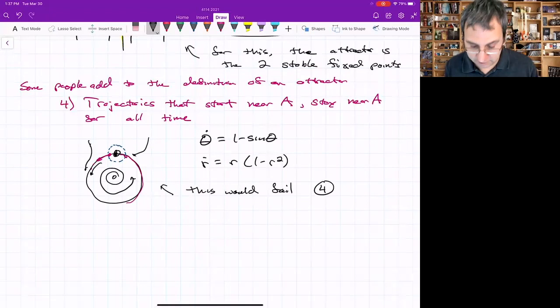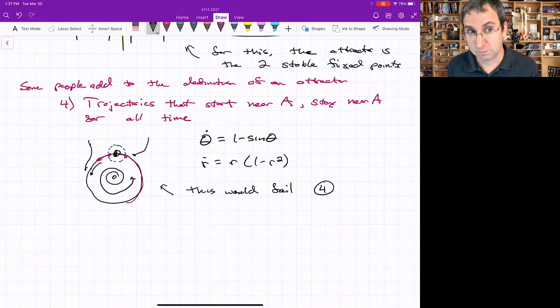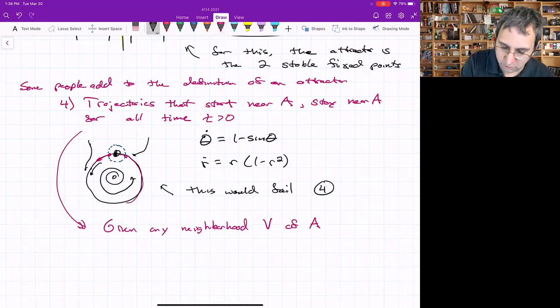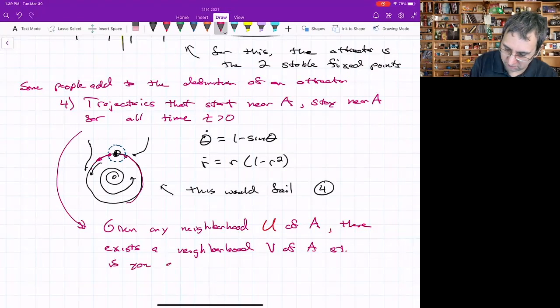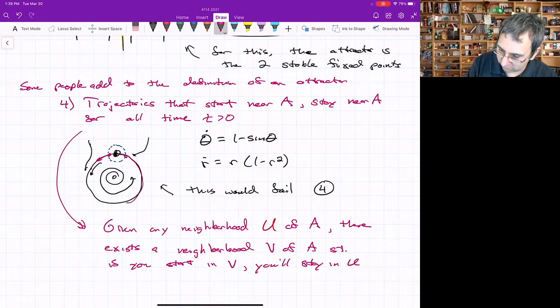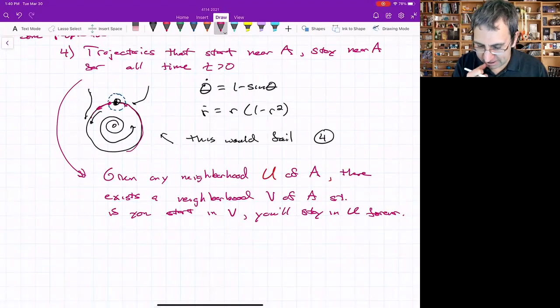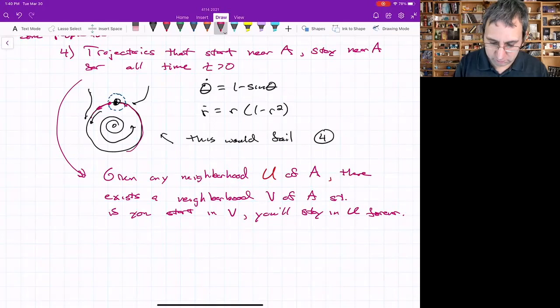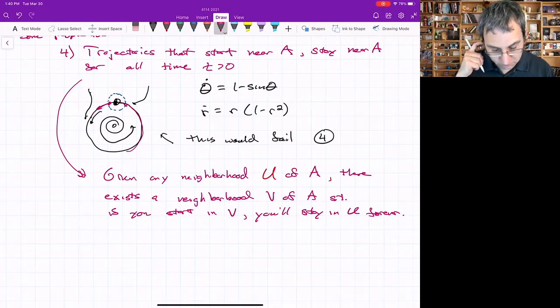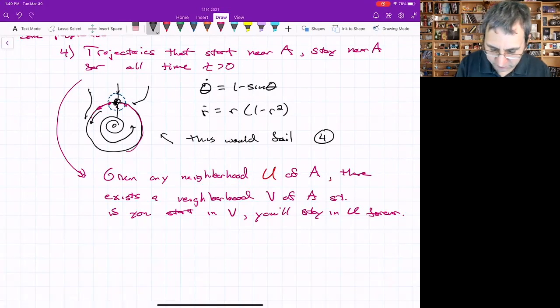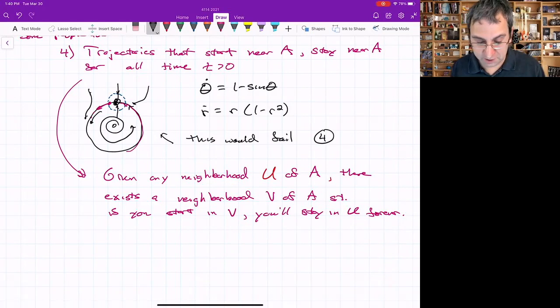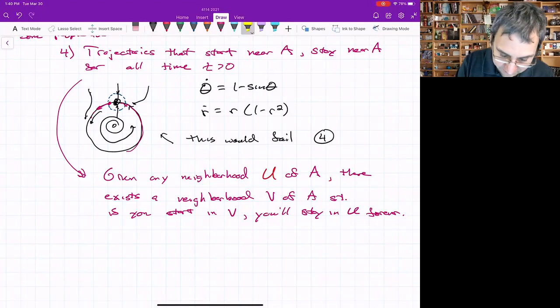It would fail this other criterion, but it's kind of up to you. For the Lorenz attractor, it does indeed satisfy number four as well. It's usually put as: given any neighborhood U of A, then there exists a neighborhood V of A such that if you start in V, you'll stay in U forever. This also brings up the difference between attracting and Lyapunov stable. This point is attracting because all points do end up at it. Things end up there. So it's an attractor according to definitions one through three.